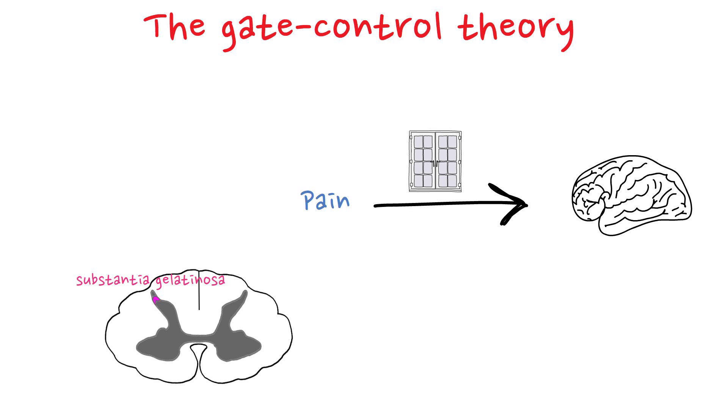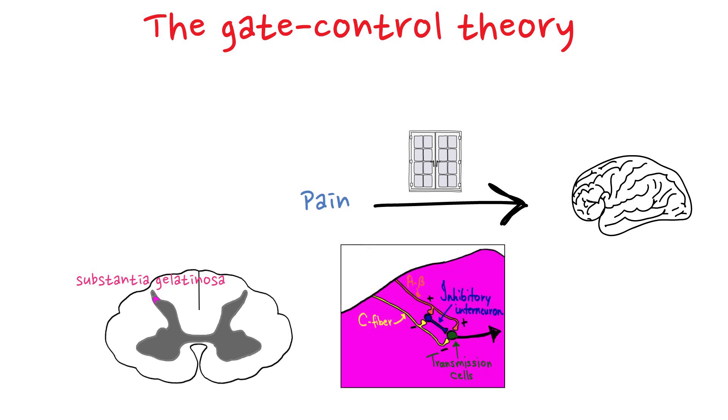If we take a closer look at the gate, the pain signals come from, for example, the C-fibers, and pass through the gating mechanism to the transmission cells and then to the brain.